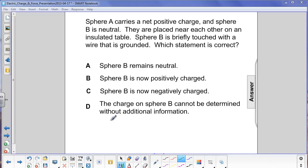Sphere A carries a net positive charge, and sphere B is neutral. They're placed near each other on an isolated table. Sphere B is briefly touched with a ground wire, which means it's touched and then right away removed, and we want to see which one of these statements is correct.